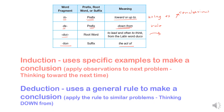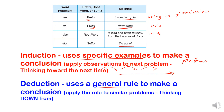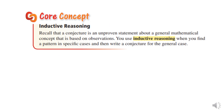Induction uses specific examples to make a conclusion — maybe you find a pattern and apply observations to the next problem. You're thinking: this worked here, this worked again, therefore I can conclude this. Deduction uses a general rule to make a conclusion — in other words, you know there's a rule out there, so you think down from the rule.